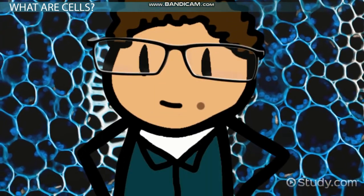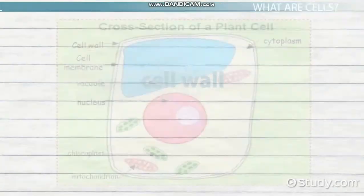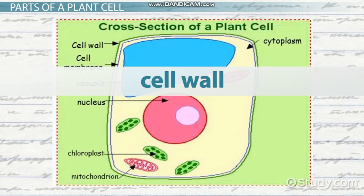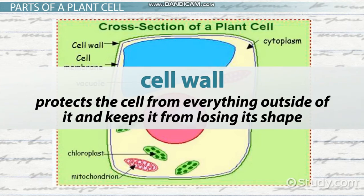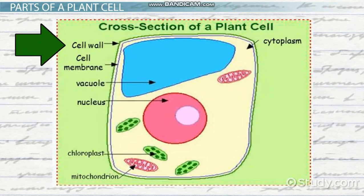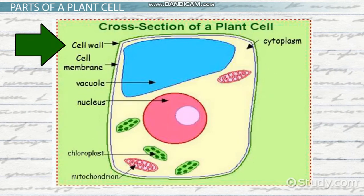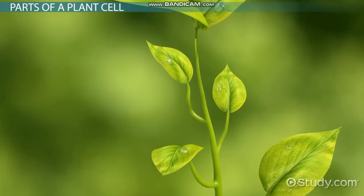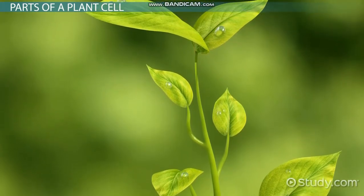Let's explore the plant cell. The cell wall is much like the walls of a factory building. It protects the cell from everything outside of it and keeps it from losing its shape. This is a special part that can be found on plant cells but not on animal cells. It's necessary because plants, unlike animals, do not have bones to hold them up.